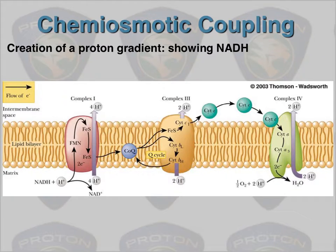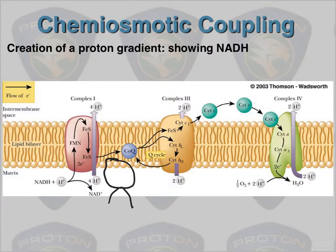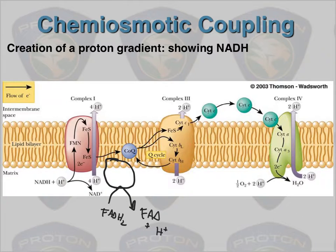Cytochrome C jumps over to complex four, where ultimately the electrons get passed off to oxygen to make water. I don't care so much about the exact stoichiometry since people argue four versus two here and there, but you need to know it's multiple protons that go from the matrix to the intermembrane space at complexes one, three, and four. If it was FADH2, it would enter at complex two, and the Q cycle would still exist, but we don't pump any protons across at complex two.